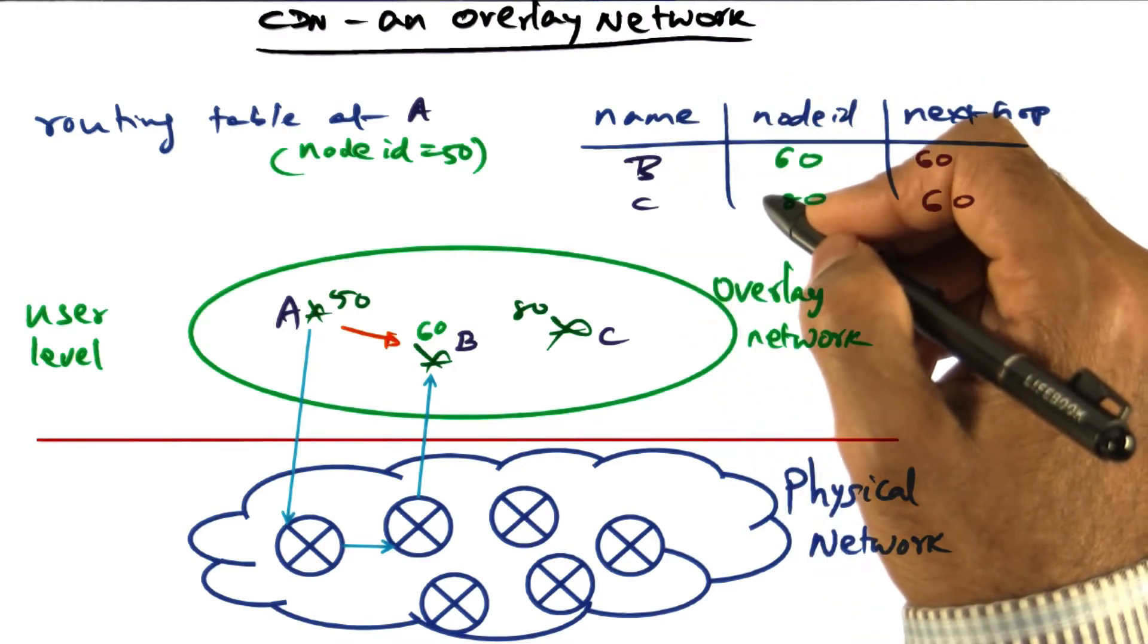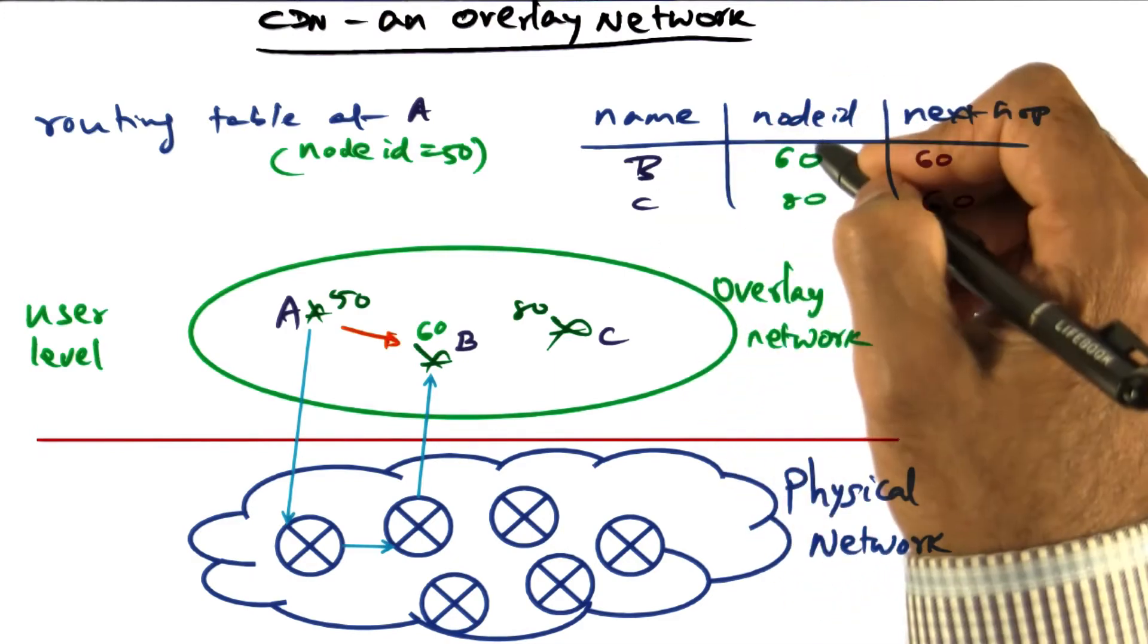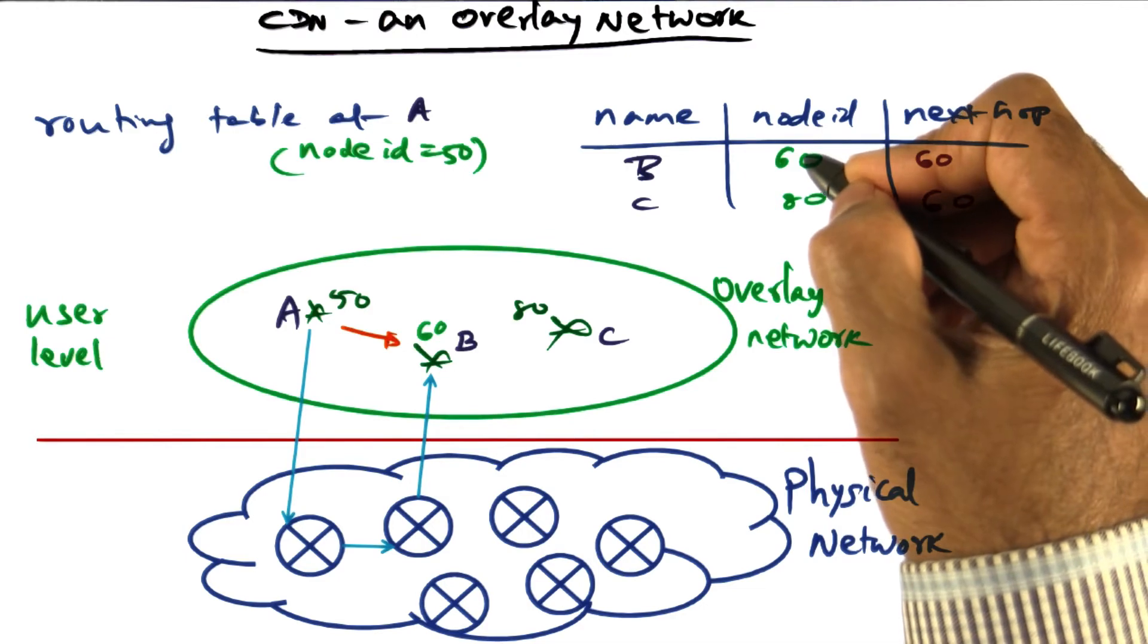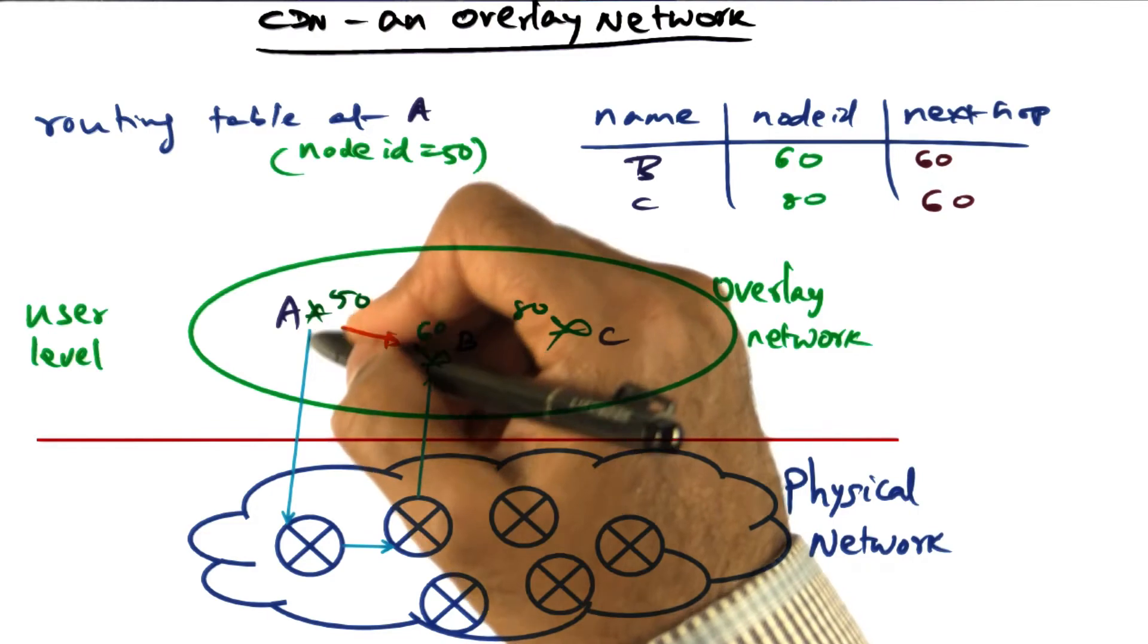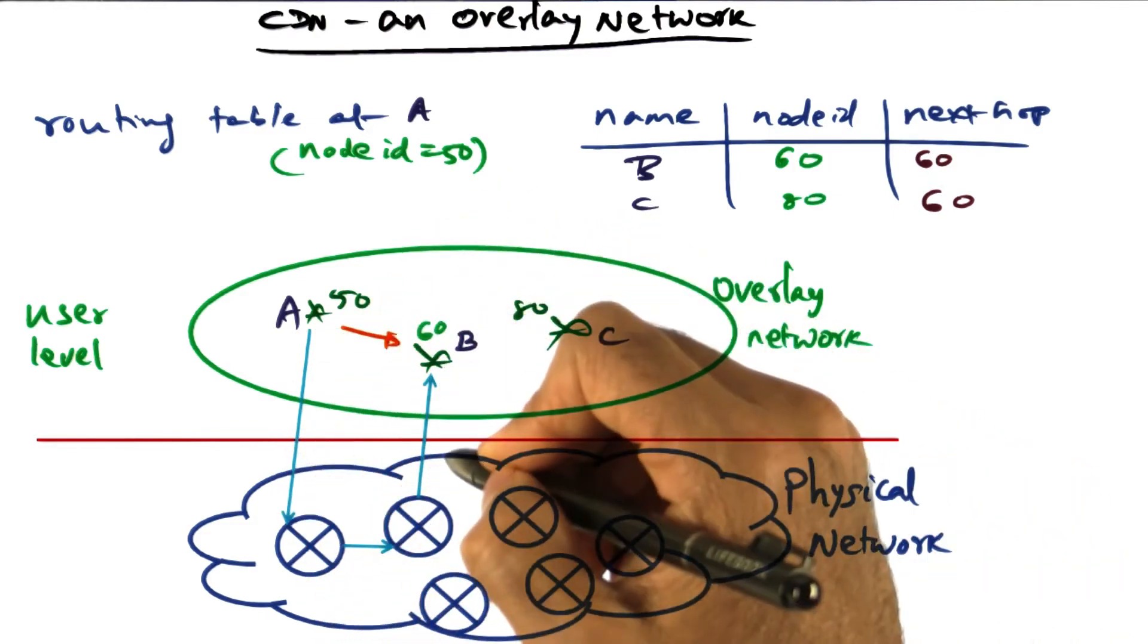Now, if I wanted to send a message to my buddy B, whose node ID is 60, because B has given me his IP address, when I send a message to that node ID, I can convert it to the IP address, give it to the physical network, and it gets delivered to B.